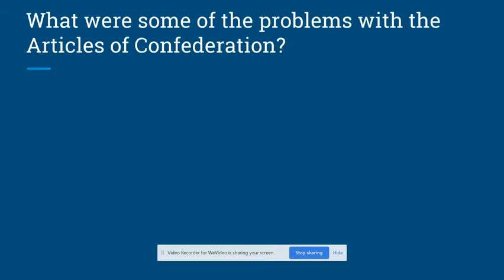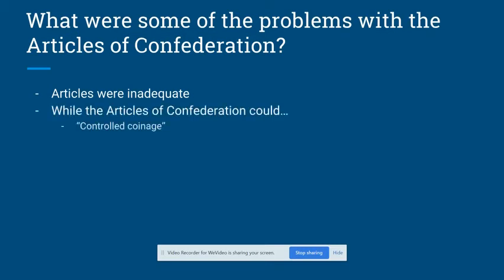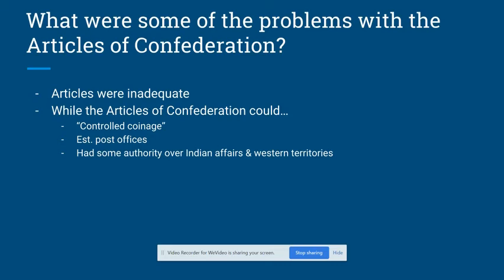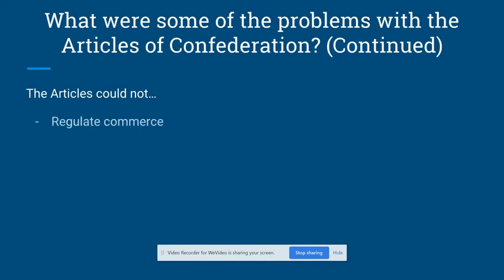The inherent weakness of the Articles caused problems. While the central government under the Articles had control over important parts of society like coinage, Indian affairs, the post office, and western territories, it really couldn't do important things that a government needs to do — like regulate commerce, collect taxes, or somehow keep people and states accountable for following the resolutions passed by Congress. The tasks listed on this slide are extremely important, and if a government can't do these things, the government is just too weak to be effective. The Americans would eventually find that out.